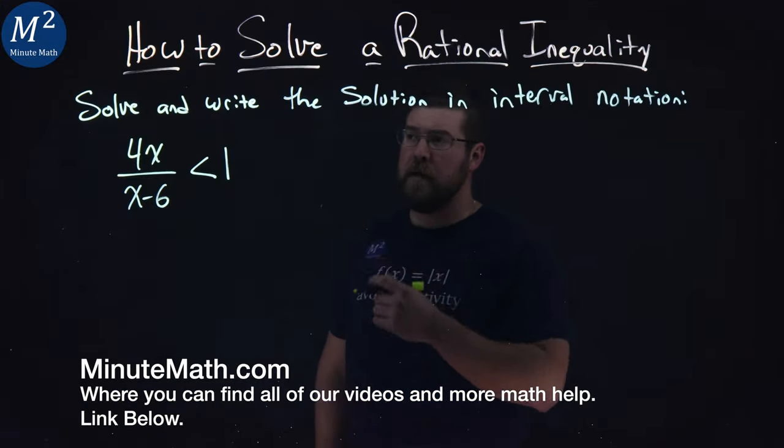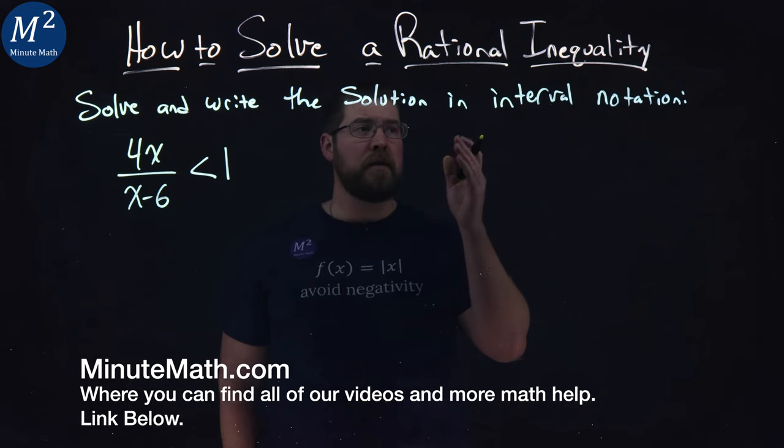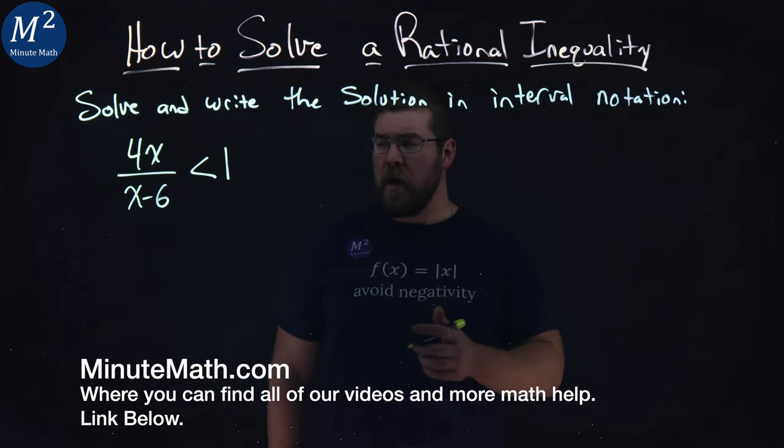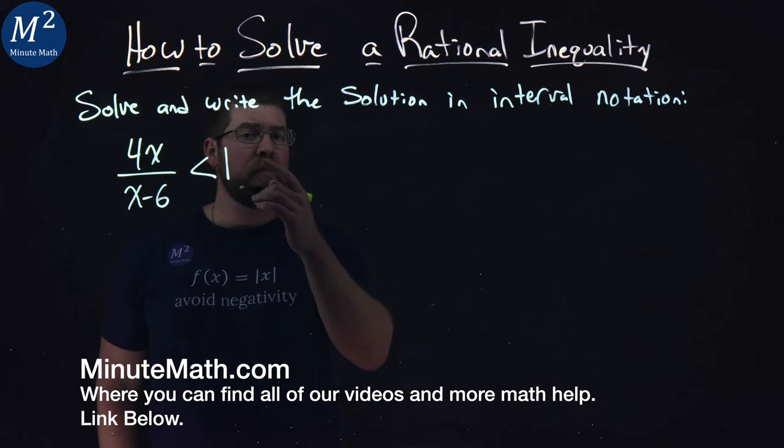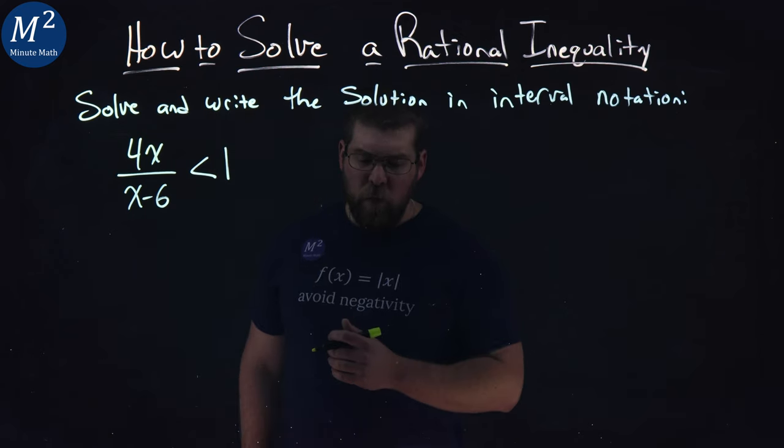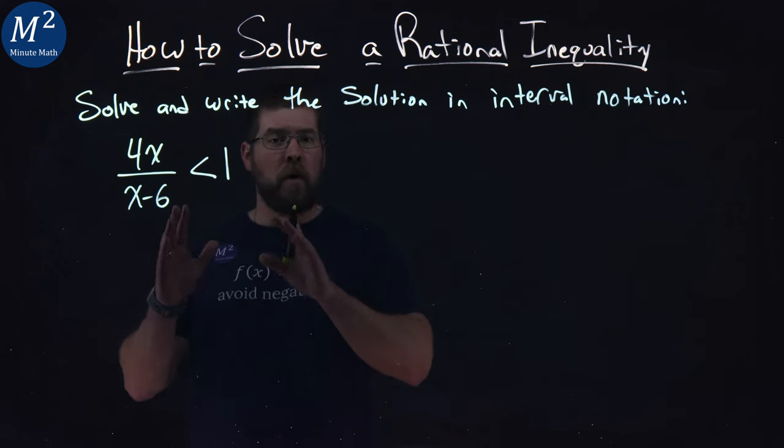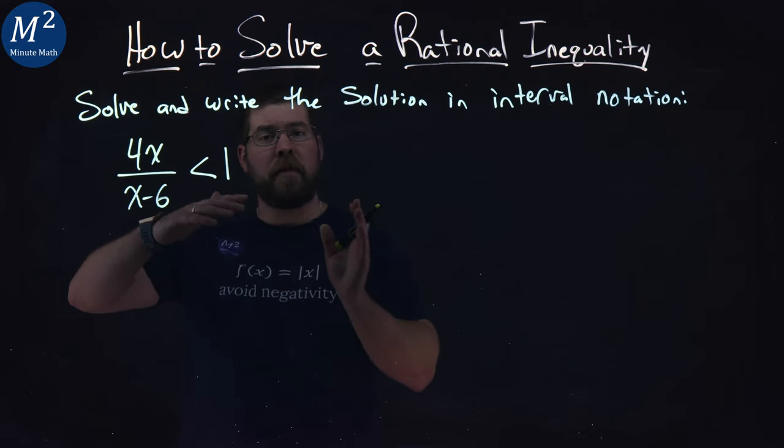We're given this problem right here. Solve and write the solution in interval notation: 4x over x minus 6 is less than 1. Well, our first step here is we want this inequality to have 0 on one side and everything else on the other.